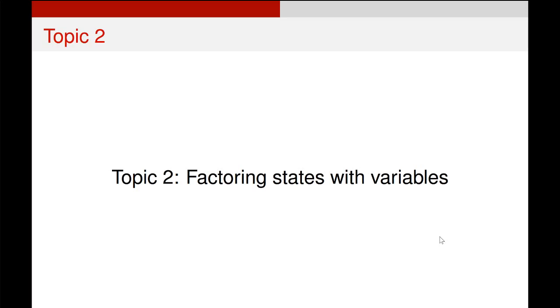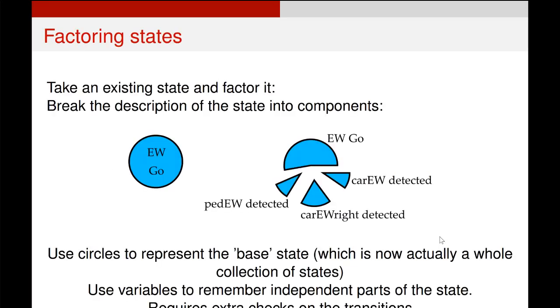The solution to this is something called factoring states using variables. The idea here is rather than having a specific state for each possible sensor value, we have a base state and we use variables to remember the value of the sensor and dictate certain transitions.